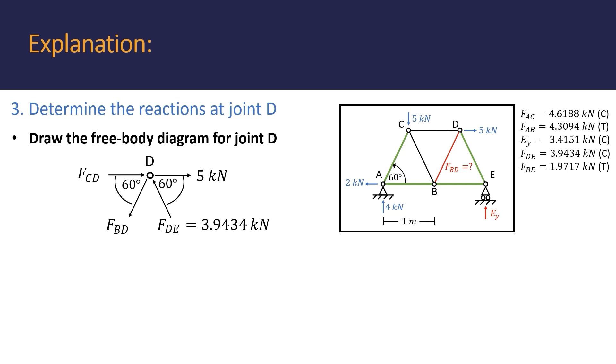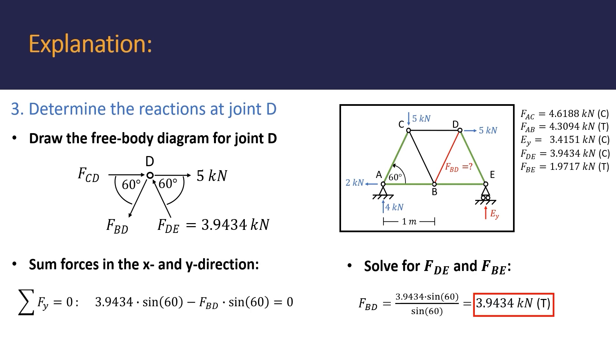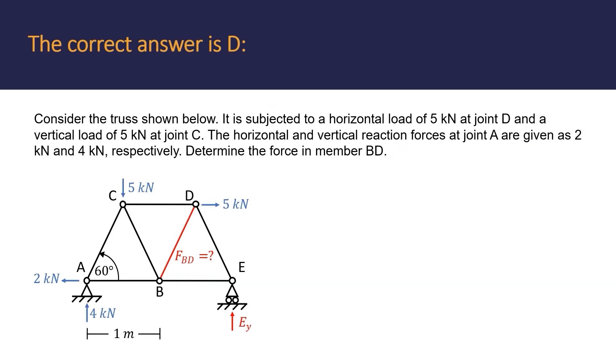By inspecting the free body diagram, we notice that the sum of the forces in the Y direction allows us to solve for force BD as the only unknown. The equation is 3.9434 sin 60 negative force of BD sin 60 equals zero. Using this equation, the force in member BD is finally found to be 3.9434 kN, and since the value is positive, we know that our original tension assumption was correct.